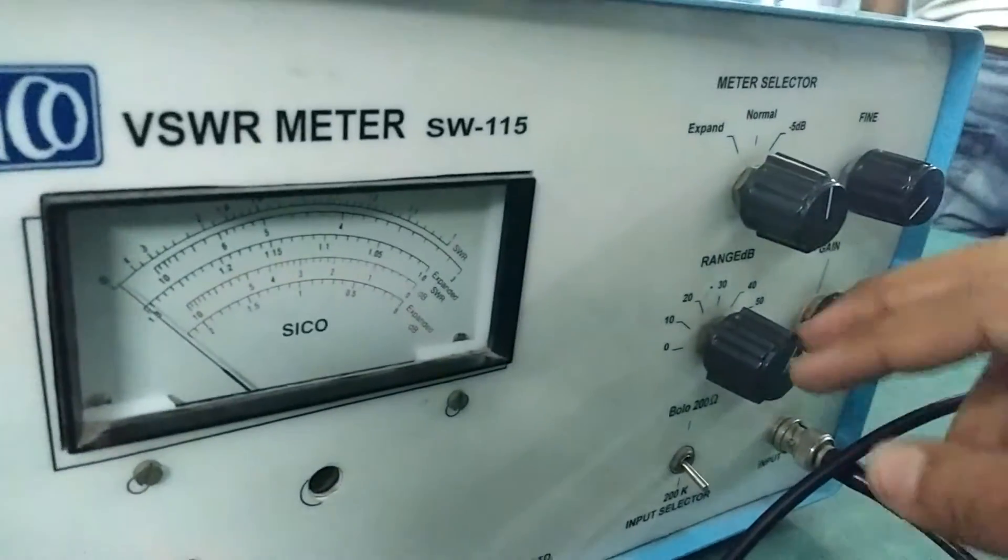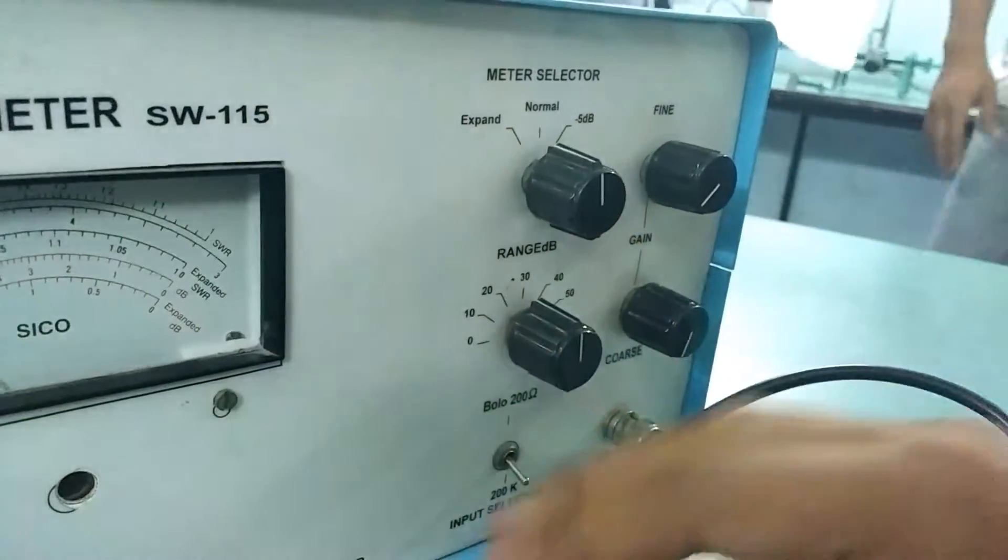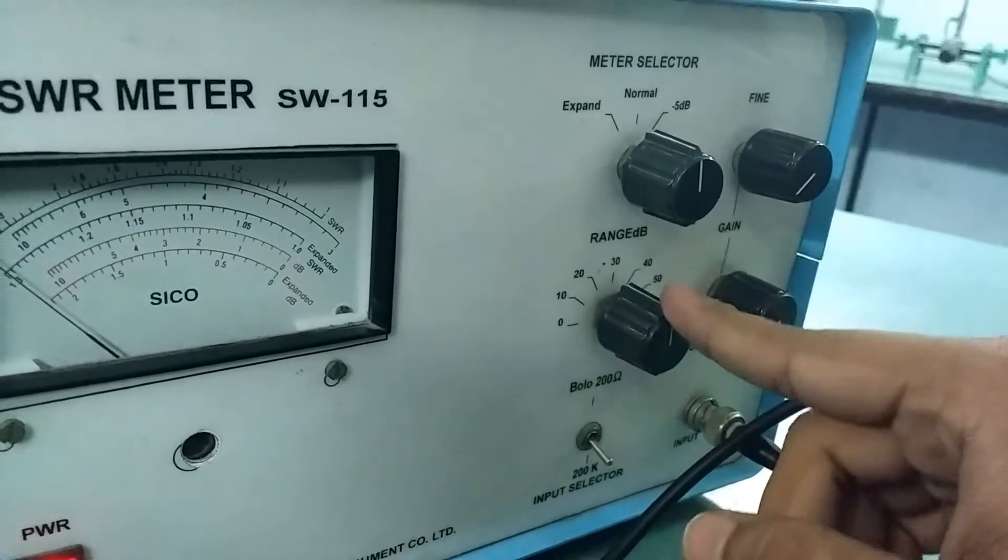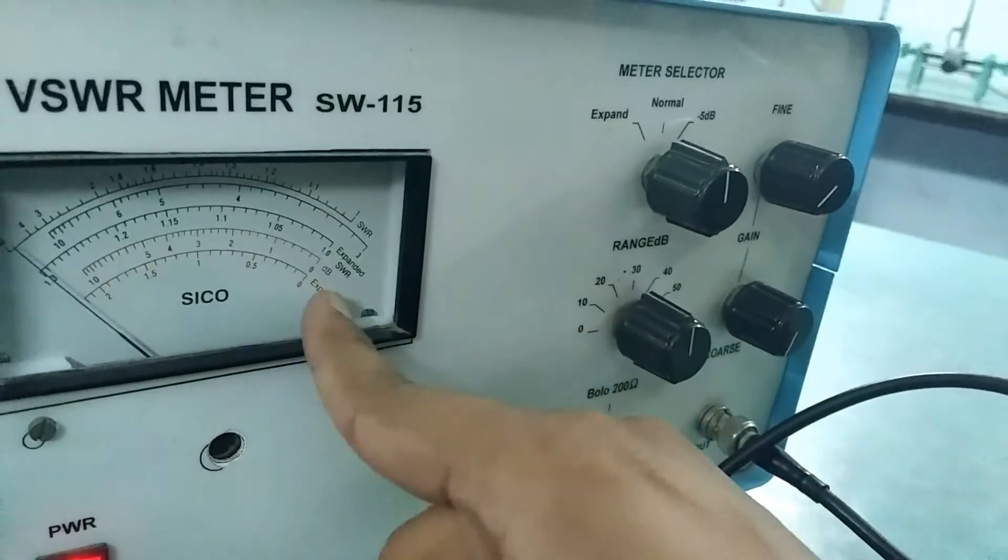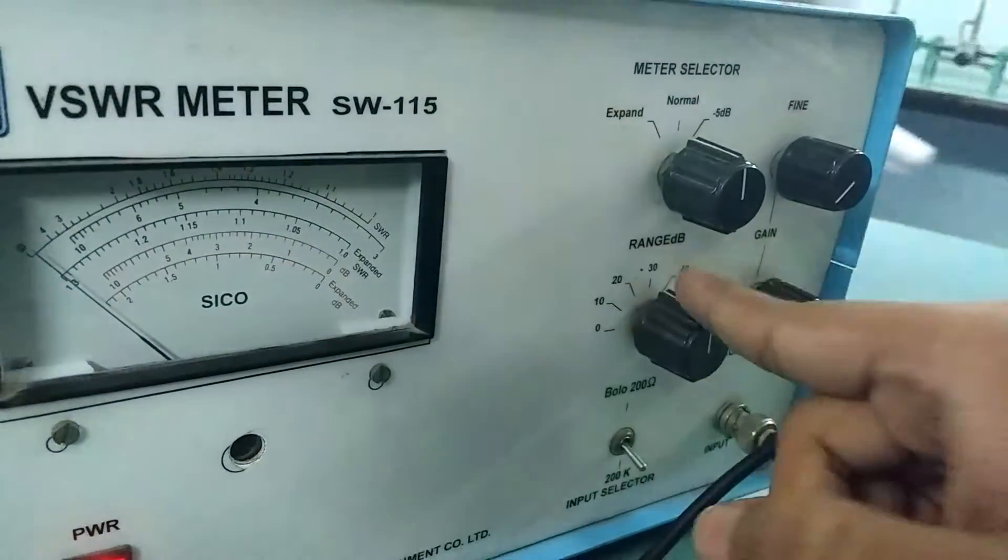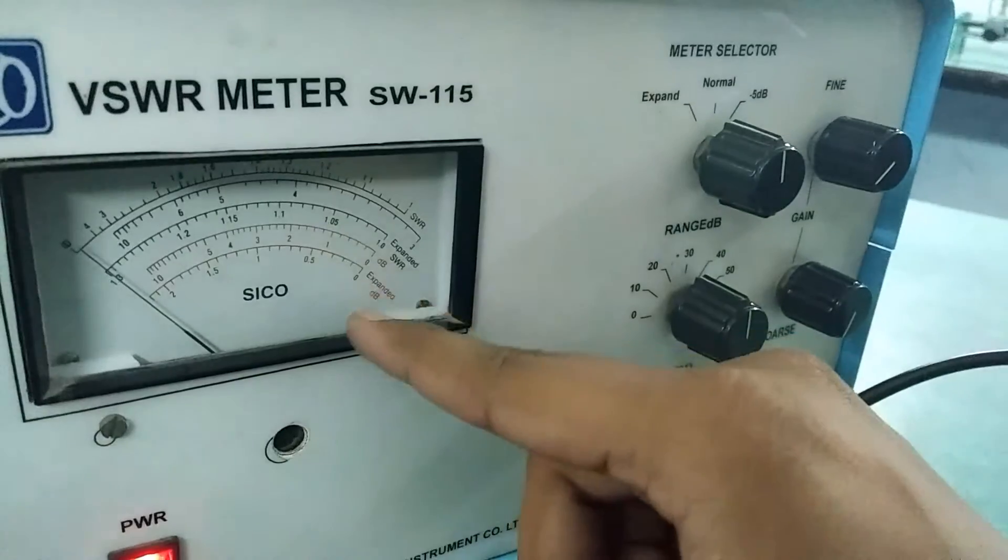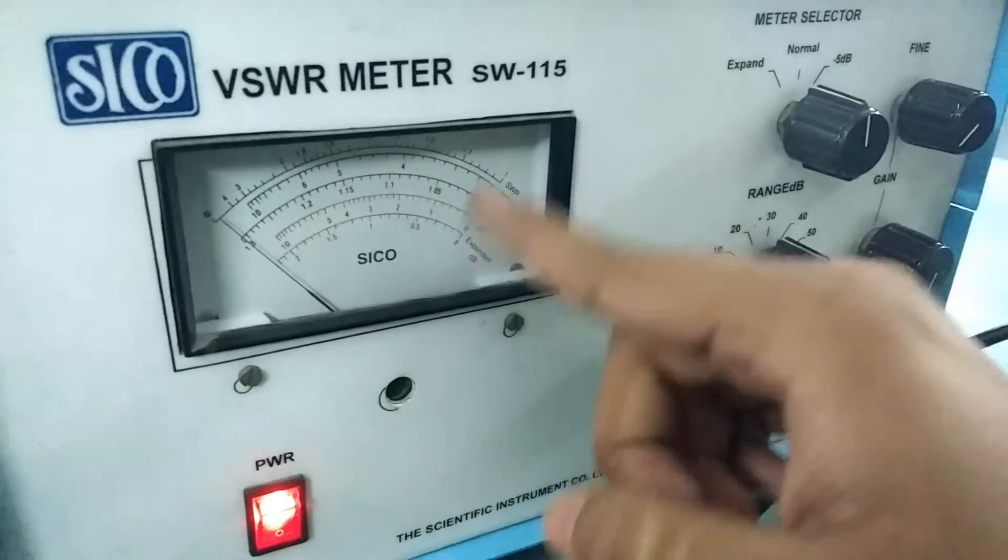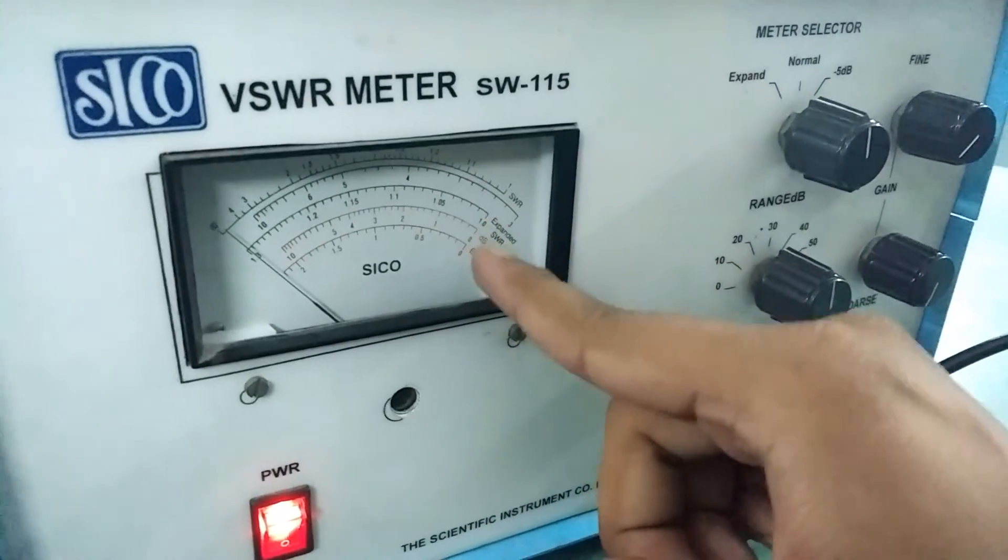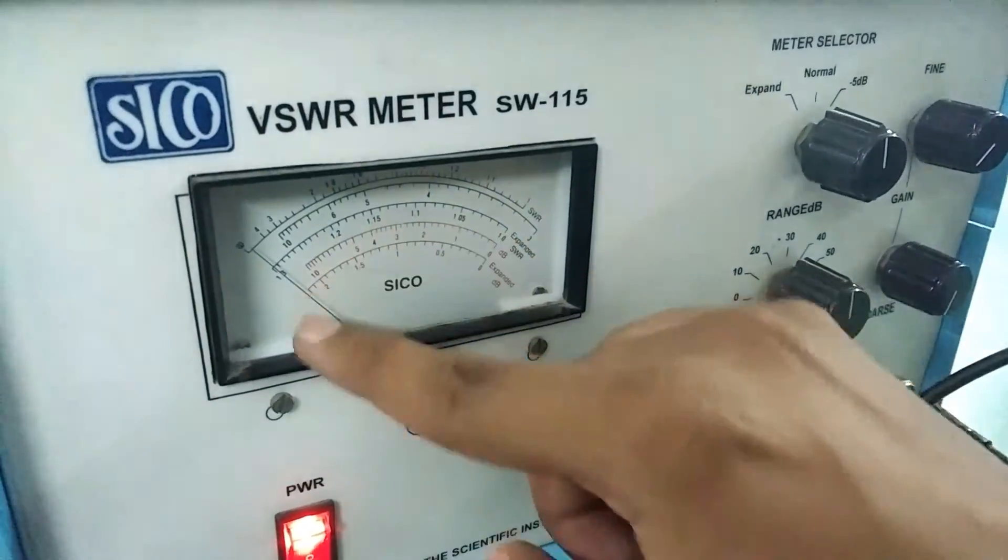And as we are using the minus 30 dB range, whatever the reading will come, say the needle comes at two, the reading will be minus 32. Minus 30 plus one and two, minus 32, like this. We will use the second scale from the bottom where dB scale is written. Thank you very much.